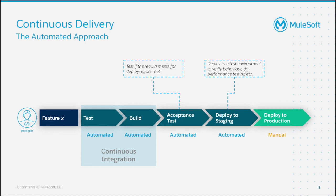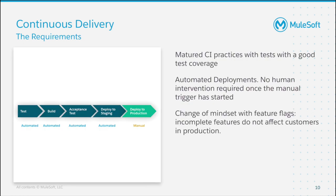You can see in the image that continuous integration is within continuous delivery. Here we're talking about an approach where teams create software in short cycles, ensuring the software is releasable at any given time. When releasing to production you do it manually, but all the other steps — including acceptance tests to verify requirements, deployments to staging, or performance testing — are already automated to accelerate delivery. Requirements include a mature CI practice with good test coverage, and automated deployments so that any routine is automatically deployed except for the manual approval to production.